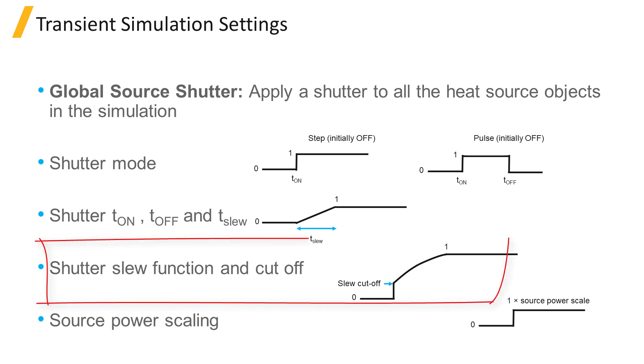The shutter slew function can be linear for a linear transition between on and off states or logarithmic for an exponential change.